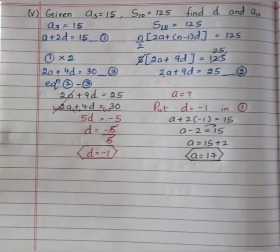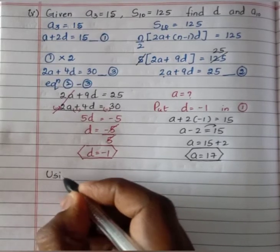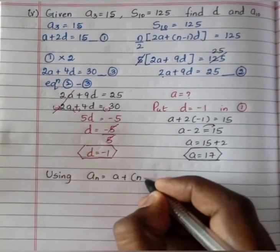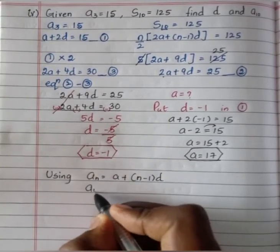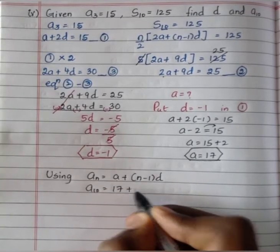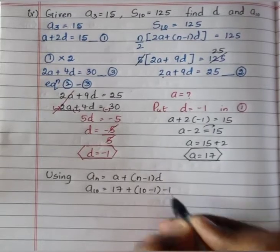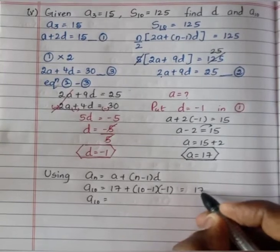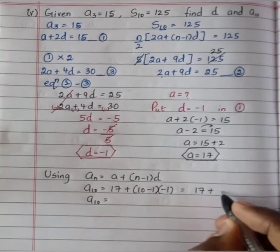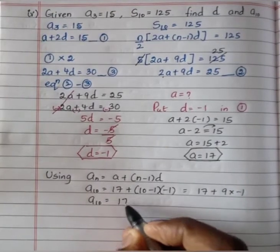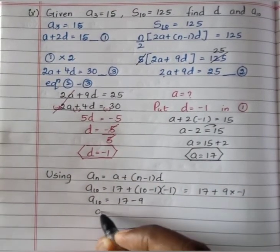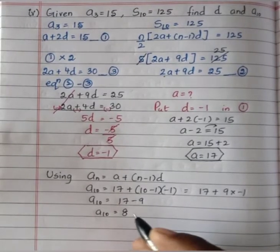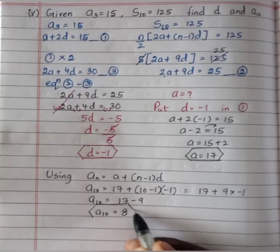Using a equals 17 and d equals minus 1, we find the 10th term: a10 equals 17 plus 10 minus 1 into minus 1, giving 17 plus 9 times minus 1, which equals 17 minus 9 equals 8. The 10th term of the AP is 8.